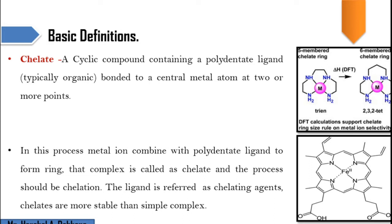Here we have an example of an inorganic or organic ligand that has the tendency to donate four lone pairs to the metal ion. When they donate four lone pairs, they form a ring. Whenever we get a ring, such metal complexes are called chelates. In this process, the metal ion is combined with the polydentate ligand — as seen in the diagram — forming a ring, and that complex is called a chelate; the process is called chelation.